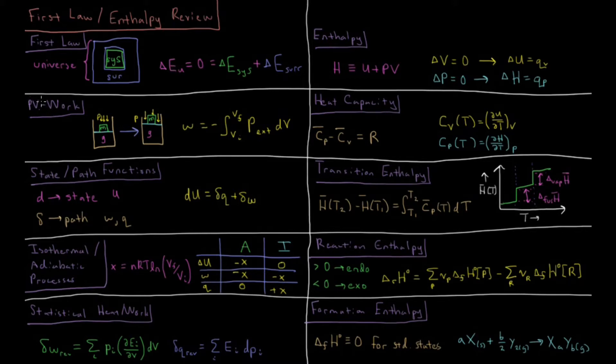We can then define pressure volume work. We have for example some gas inside of a cylinder and it can push up against some external environment and do work on it or it can be compressed and have work done on it by the environment. The work which the system does is defined as minus the integral from the initial volume to the final volume of the external pressure at every step along the way integrated with respect to volume dV.